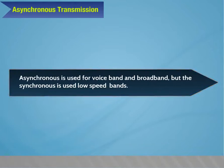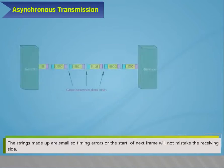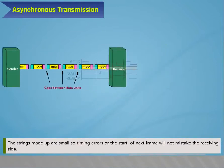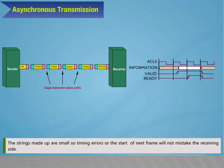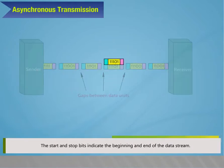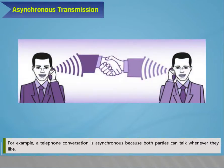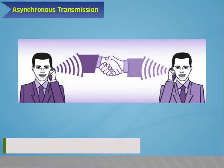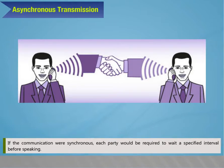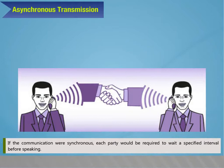Asynchronous transmission is used for voice band and broadband, while synchronous is used for low-speed bands. The start and stop bits indicate the beginning and end of the data stream. For example, a telephone conversation is asynchronous because both parties can talk whenever they like. If the communication were synchronous, each party would be required to wait a specified interval before speaking.